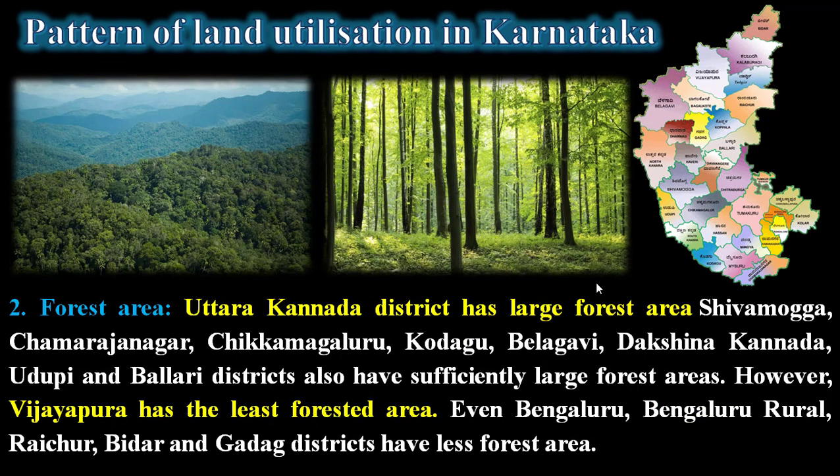The second pattern of land utilization in Karnataka is forest area. Uttara Kannada district has the largest forest area, followed by Shivamogga, Chamarajanagar, Chikkamagaluru, Kodagu, Dakshina Kannada, Udupi, and Ballari districts, which have sufficiently large forest areas. Vijayapura and Vijayanagara stand in the least position with very little forest. Bengaluru rural, Raichur, Bidar, and Gadag districts also have very less forest area.